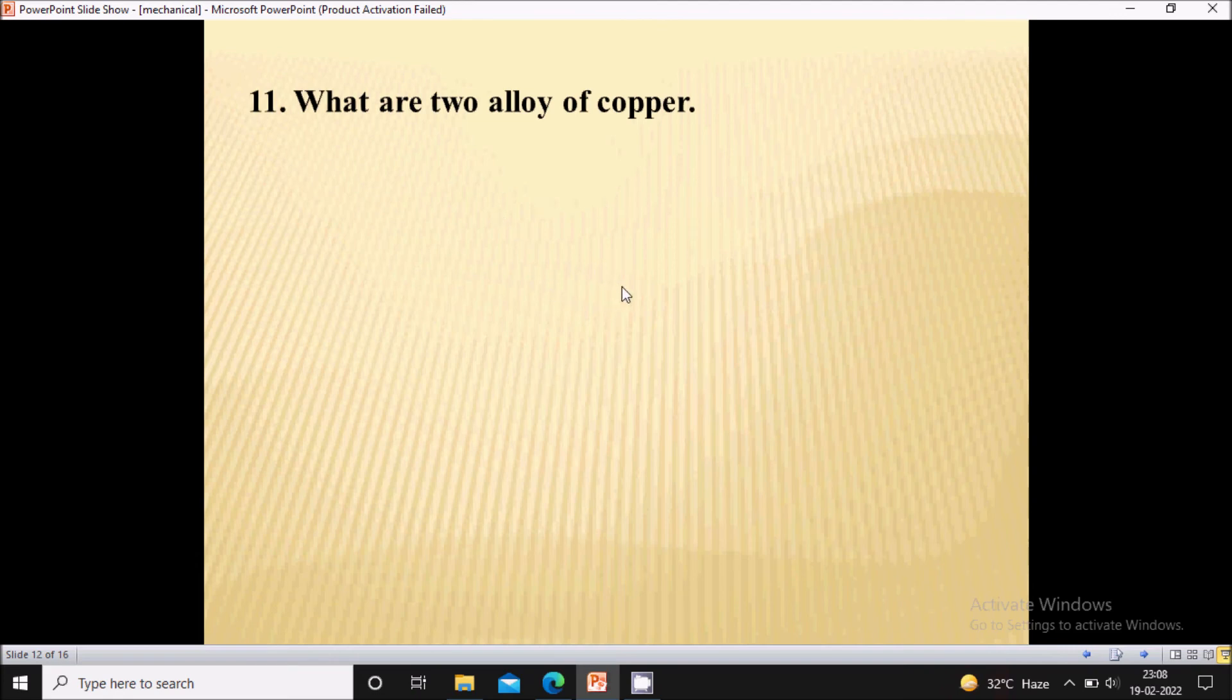Eleventh, what are the two alloy of copper? So brass is the first alloy of copper that contain copper and zinc. And bronze is the second alloy of copper that contain copper and zinc.